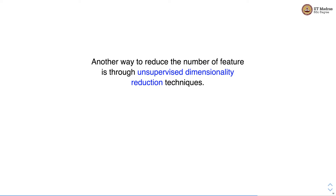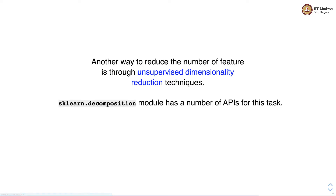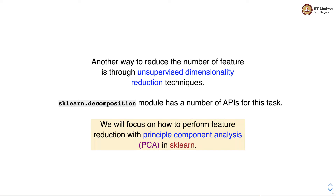Another way to reduce the number of features is through unsupervised dimensionality reduction techniques. The sklearn.decomposition module has a number of APIs for this task. We'll focus on how to perform feature reduction with a specific technique called principal component analysis, and how to perform PCA in sklearn.